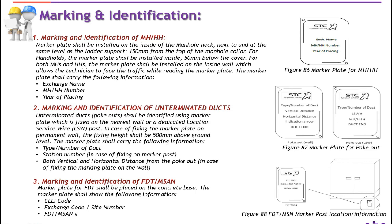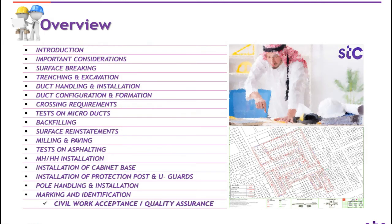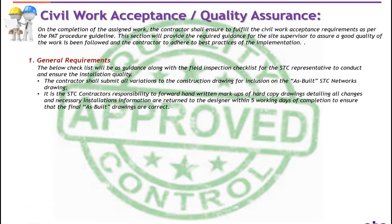Number three: marking and identification of FDT or MSAN cabinet. The marking plate for FDT shall be placed on the concrete base. The marker plate shall show: CLLI code generated by the system by designers, exchange code or site number, and FDT or MSAN cabinet number.